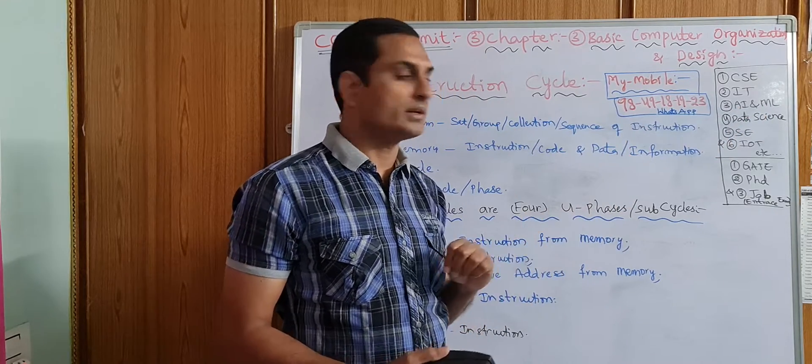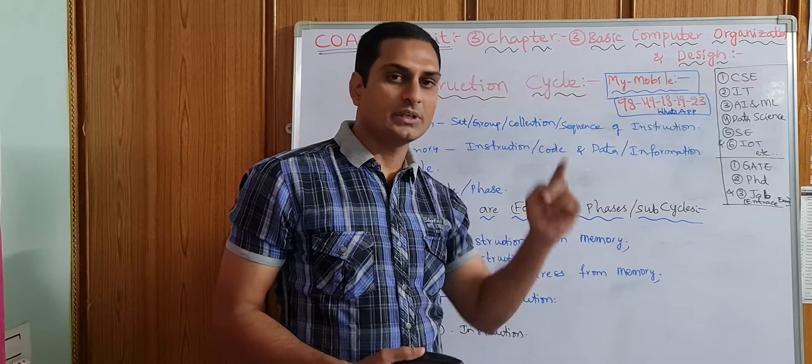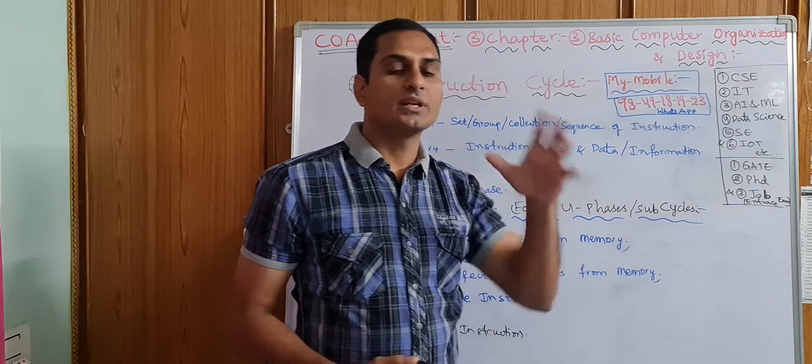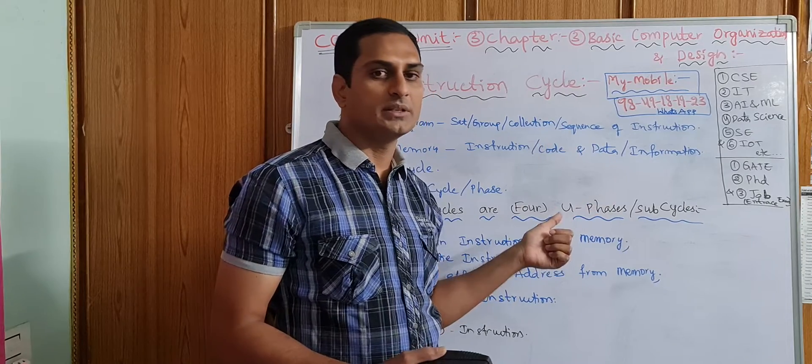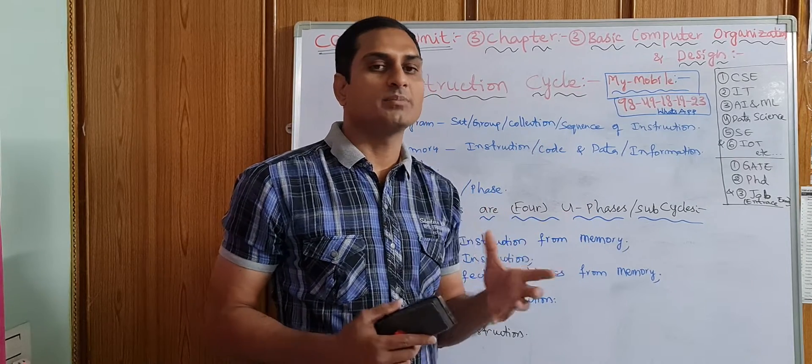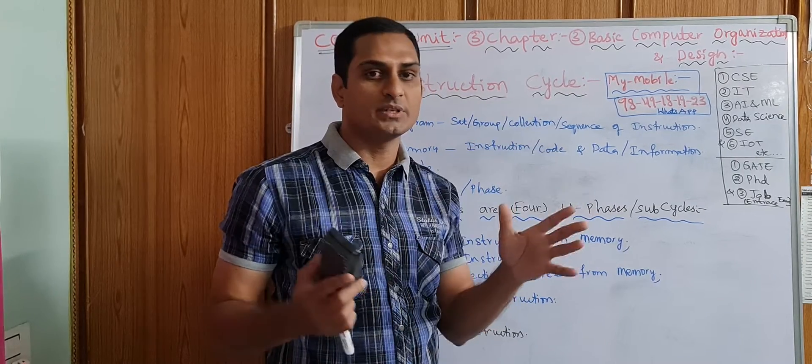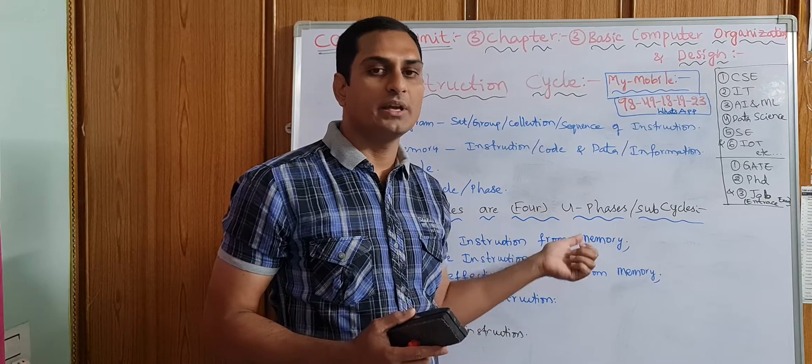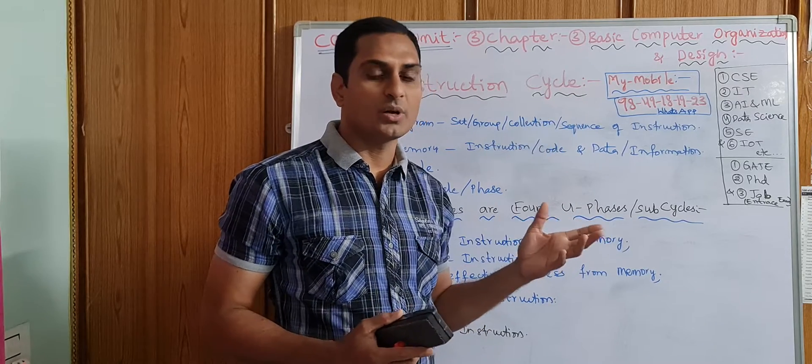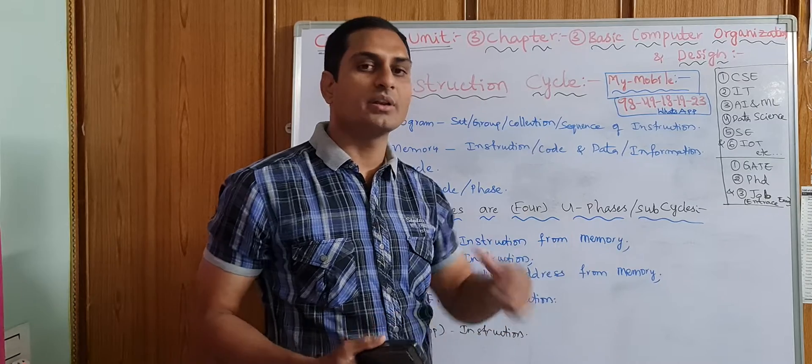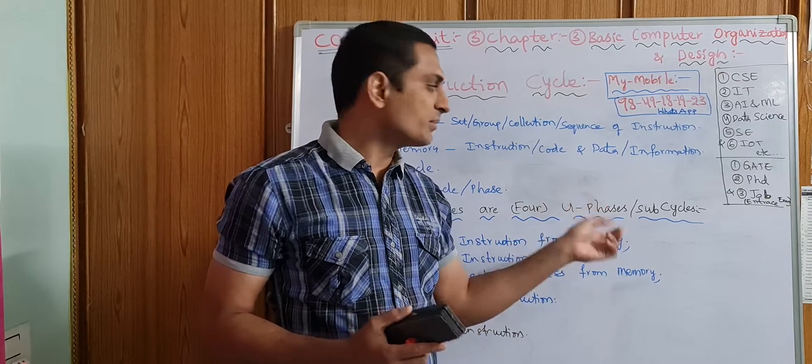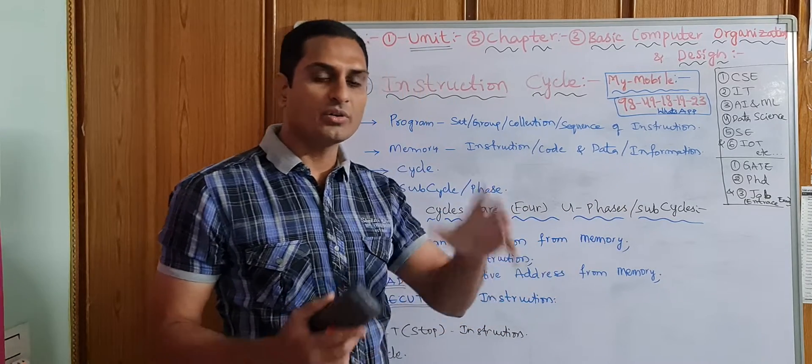Data science branch people also have this subject in second year, and software engineering people. In some universities, IoT internet of things group people also have this subject. This is a core basic subject. Previously it was CO, computer organization. Now it is computer organization and architecture. This subject is core and fundamental.